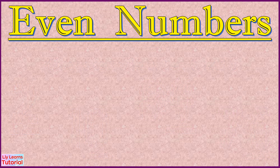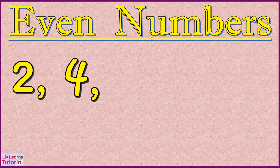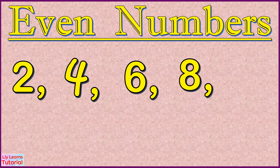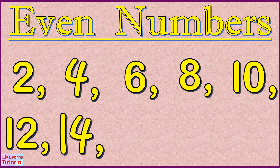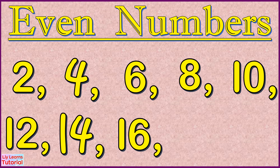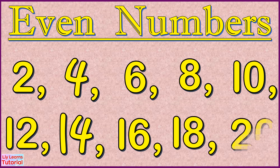If we skip count by twos starting from two: two, four, six, eight, ten, twelve, fourteen, sixteen, eighteen, twenty are all even numbers.